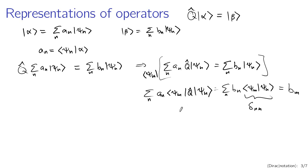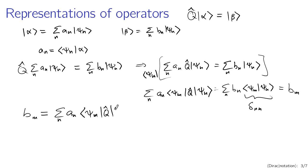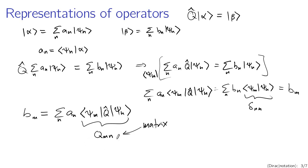The beauty of this notation is that b sub m — the representation of the result of the operator acting on vector a — can be written as a sum over n of a sub n times psi sub m q hat psi sub n, which is just a number. I can compute all of these quantities by plugging in, say, m equals 2 and n equals 3, m equals 5 and n equals 1, etc. It depends only on m and n, so we write this as q sub m n — a matrix element with two free indices.